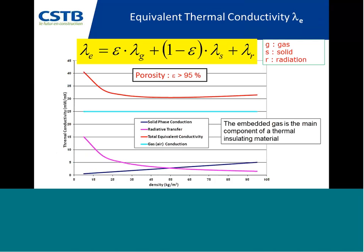You can see in the graph the dark blue line which is the solid part — a very low contribution. You have the radiation shown as the pink curve, and for very low density the radiation increases due to the lack of structure or opacifier, so you don't have enough barrier to stop radiation. The light blue line is the thermal conductivity of the gas — in this case air — and it represents the main part since the porosity is very high.